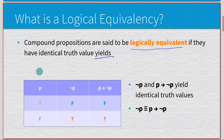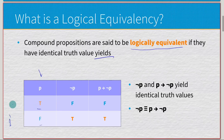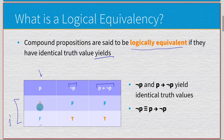So let's take a look. We have a variable p — inputs are true and false, giving us two different possibilities. We have two different expressions: negated p, and p implies negated p. If we plug in true and negate that, we get false.